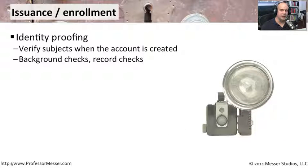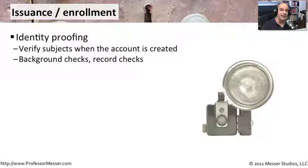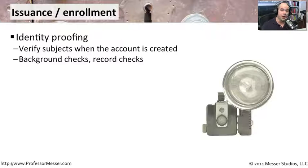Having worked in many organizations, I've seen different processes for granting network access. In some places, you have to go to a room, talk to a person, provide identification, and they put your name in the system. In others, I simply filled out a form and nobody ever verified it — they trusted whatever I put on the form. So different organizations have different ways to prove identity, including background checks, but stringent processes are needed to ensure access is given only to the right people.